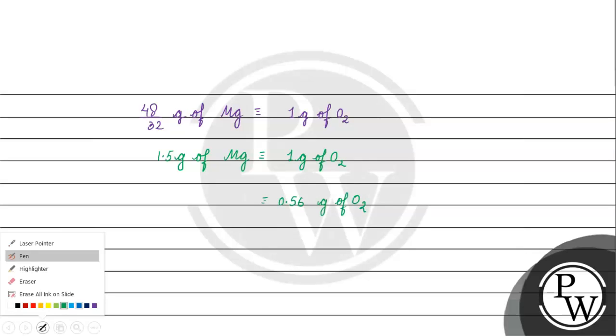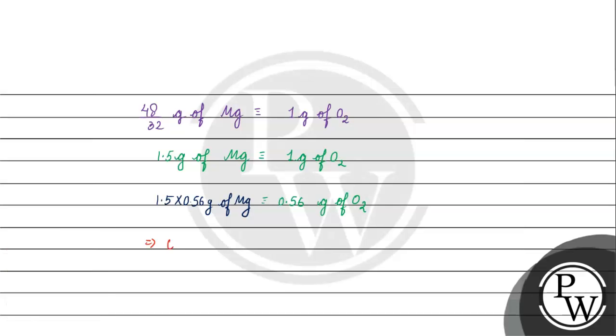So, how much amount of magnesium is used? It will be 1.5 into 0.56. This gives us 0.84 gram of magnesium.